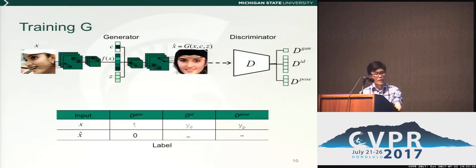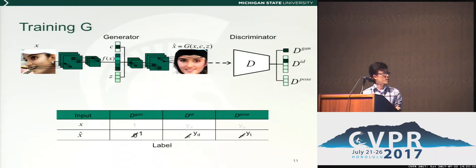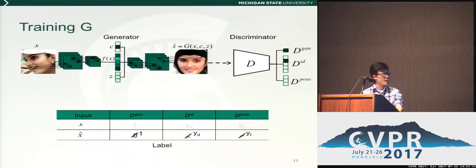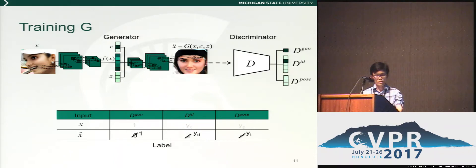When training the generator, the generator tries to synthesize the image such that the discriminator will classify it as real, and have the same identity as the original face image, with the pose specified by the pose code c.